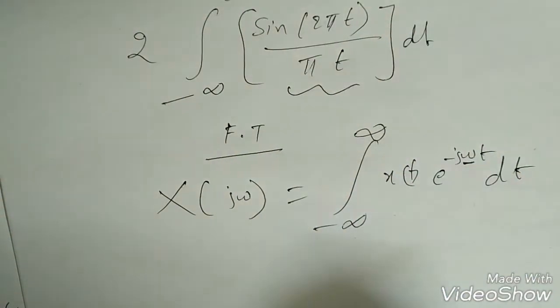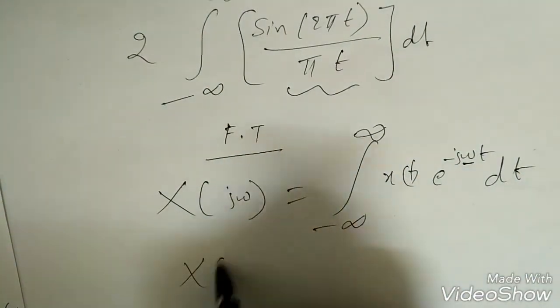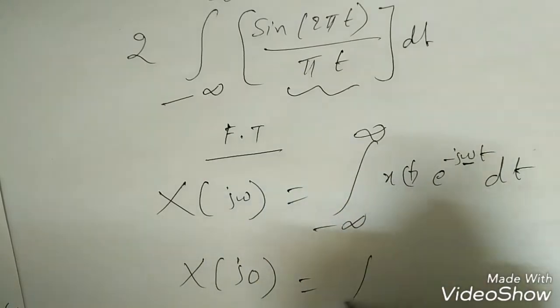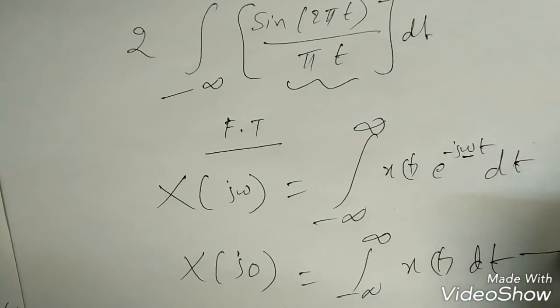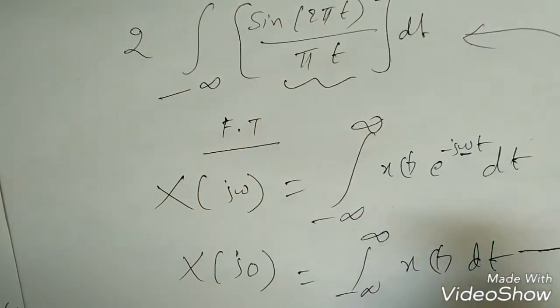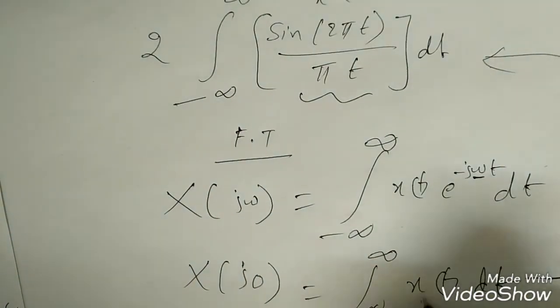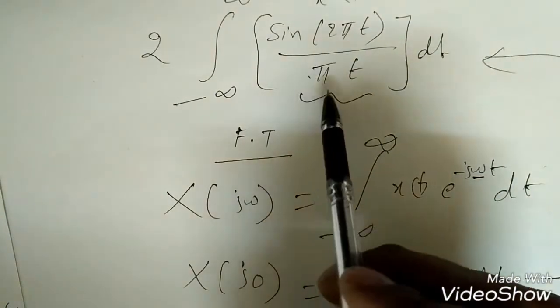Suppose in place of ω if I substitute 0, then x(0) equals the integral from minus infinity to infinity of x(t) dt. Now if you compare this and this, it's looking the same. In place of x(t) we are getting sine 2πt by πt.